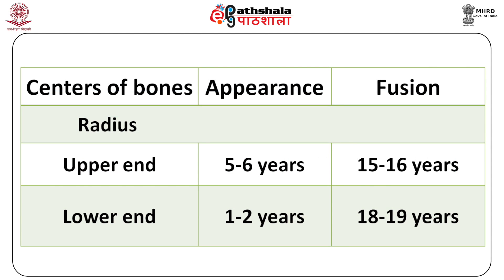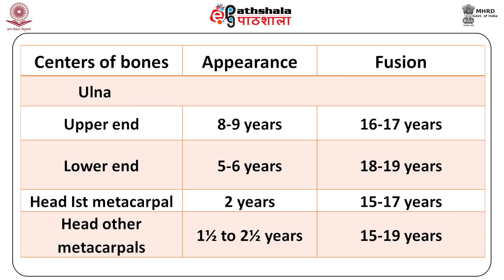For the radius, the upper end ossification center appears at five to six years and fusion is complete by 15 to 16 years, whereas the lower end appears at one to two years and fuses at 18 to 19 years. For the ulna, the upper end appears at eight to nine years and fuses at 16 to 17 years, whereas the lower end appears at five to six years and fuses at 18 to 19 years. The head of the first metacarpal appears at two years and fuses at 15 to 17 years, whereas the heads of all other metacarpals appear at one and a half to two and a half years and fuse at around 15 to 19 years.